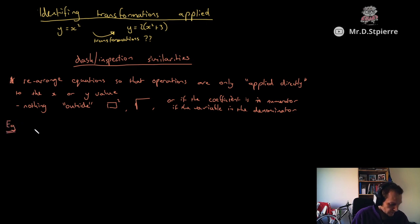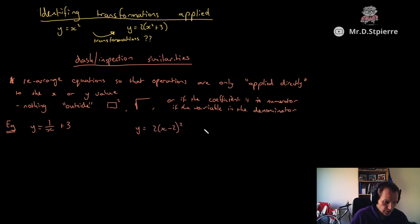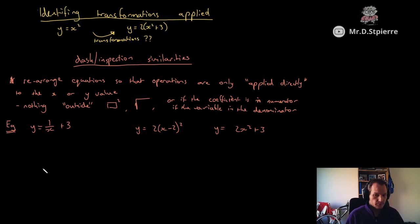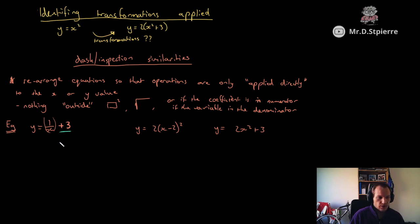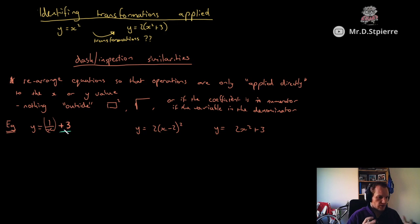So let's look at some examples. We have y equals 1 on x plus 3; y equals 2x minus 2 all squared; and y equals 2x squared plus 3. We can only have operations that are applied directly to the x or the y value. The plus 3 in the first example is not applied directly to the x — it is added to the whole fraction.